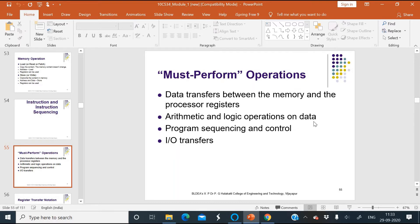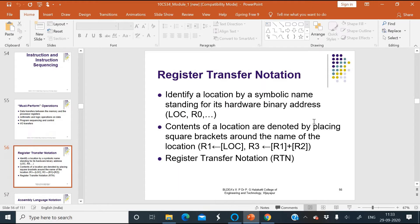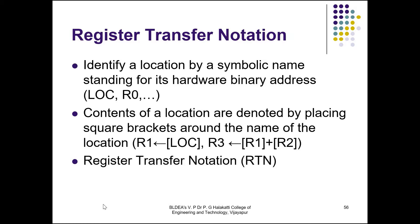In addition to specifying instructions, an ISA also specifies the addressing methods used for accessing data options and processor registers. To illustrate these operations, different representation methods are used. The first one is Register Transfer Notation, or RTN, which is also referred to as Register Transfer Language or RTL.